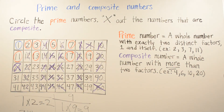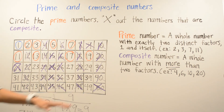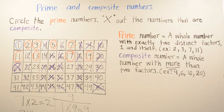Right now, if you want, you can pause the video and try to finish the other half of the chart that goes all the way up to 50, to see if you're able to finish it on your own. After you're done, you can resume and check if you circled the prime numbers correctly and X'd out the composite numbers.